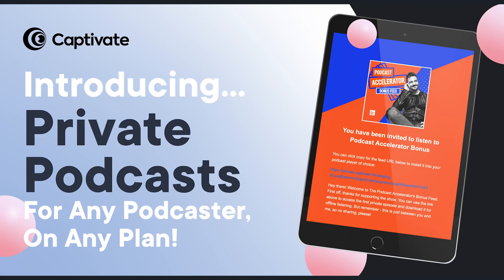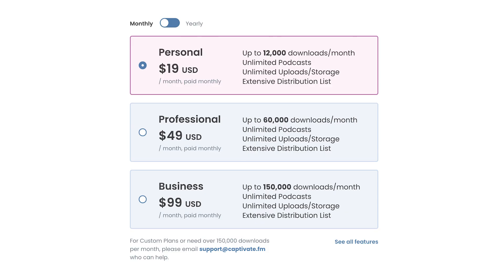Podcast hosting companies that offer private RSS feeds are usually the most cost-effective and beneficial choice for podcasters. Captivate offers private podcast feeds on any subscription tier, with unique subscriber URLs. The hosting site price starts at $19 a month, but the cost goes up based on how many downloads and private subscribers you plan to have.